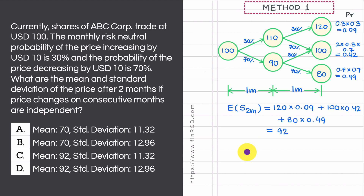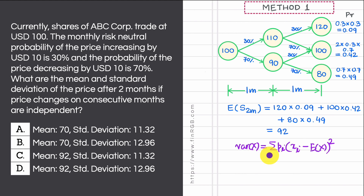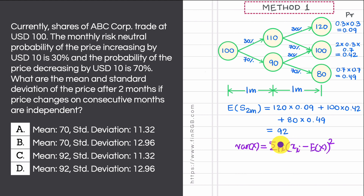Now let's find the variance of S2m. For a general random variable X, the variance is the probability-weighted average of the squared deviation of each possible value from the mean or expected value. The variance is a measure of how spread out the possible values of X are from its mean.